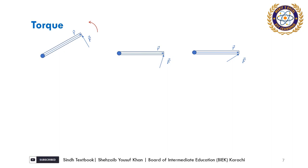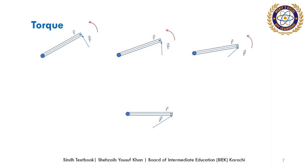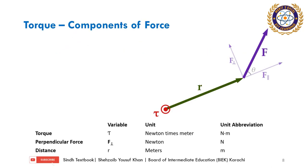If we apply force at an angle, we can take the door as an example — hold the door handle and try to open it at an angle, and the door opens with difficulty. The more the angle, the less the rotation. We can break force into components along and perpendicular to the force arm: the x-component is F cos θ (parallel) and the y-component is F sin θ (perpendicular). To produce torque, rotation is necessary.